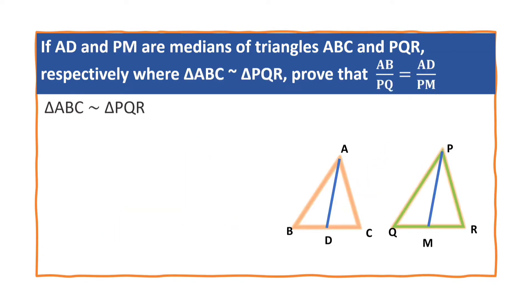We are given that triangle ABC is similar to triangle PQR. Now angle ABC, this angle, is equal to angle PQR. Why? They are corresponding angles since triangle ABC and triangle PQR are similar. Let this equation be 1.